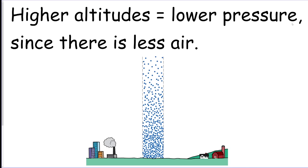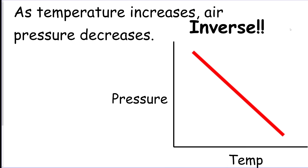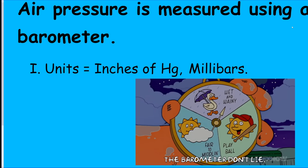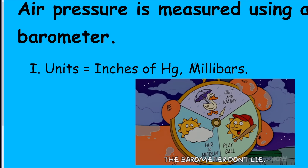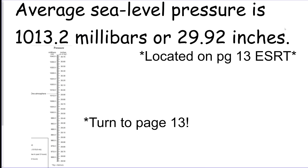Higher altitude means lower pressure. As temperature goes up, air pressure drops because there are fewer air molecules. We use a barometer to measure air pressure in two units: inches of mercury and millibars. You need to know how to convert between them using the chart on reference table page 13.